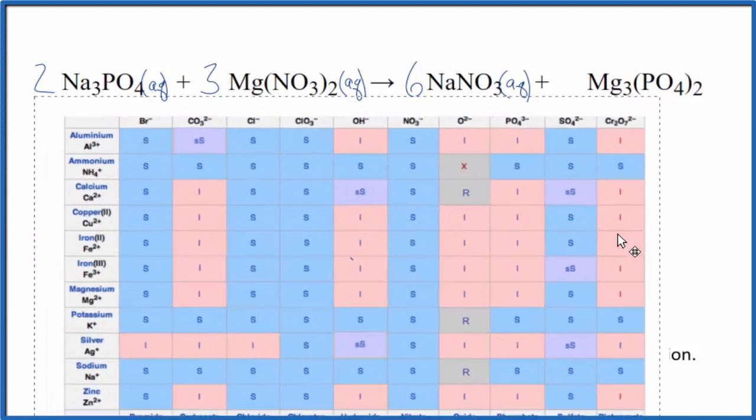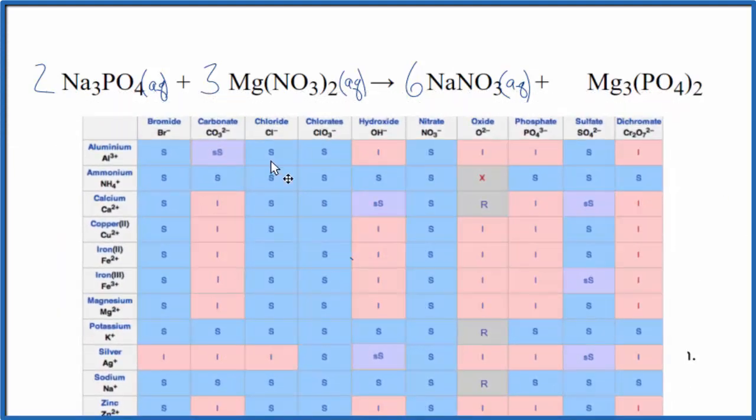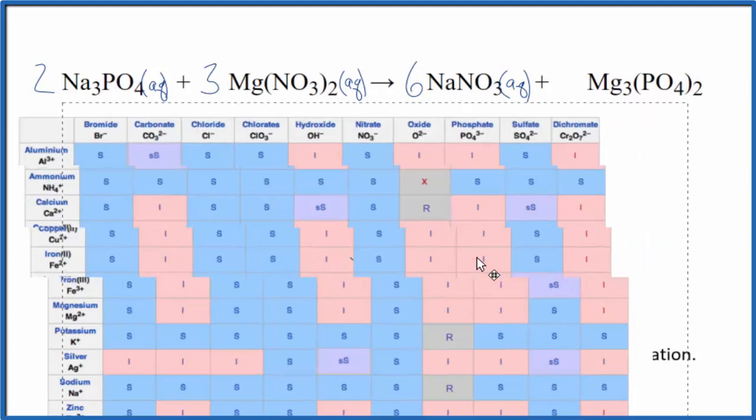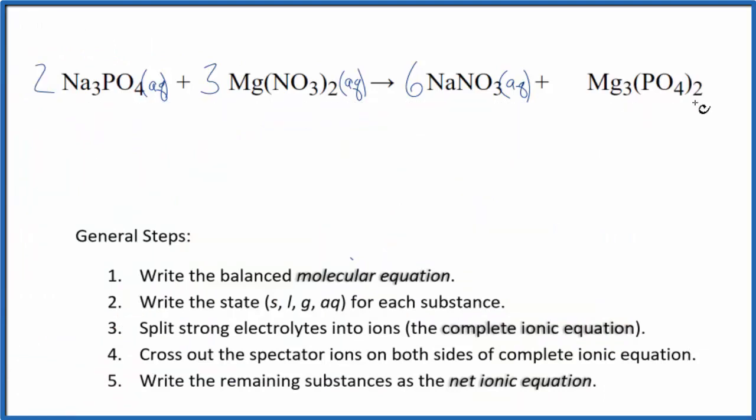Phosphates often are insoluble in water. So we find magnesium right here and we go over to phosphate, so we have this I, that means that magnesium phosphate is insoluble in water, it won't dissolve, so it's going to be a solid. So we'll write a little s after Mg3(PO4)2.